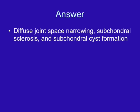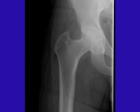The answer is diffuse joint space narrowing, subchondral sclerosis, and subchondral cyst formation. In the right hip we have diffuse joint space narrowing — no part of the joint space is spared. There is marked sclerosis along both the acetabulum and femoral head, and tiny cystic areas along the femoral head and acetabulum consistent with subchondral cyst formation. There is no definite evidence for a fracture or soft tissue mass.